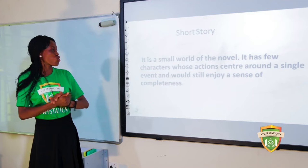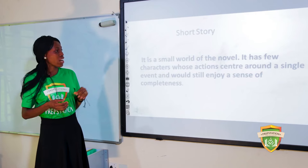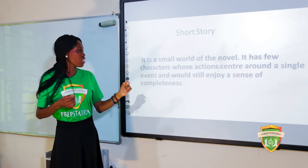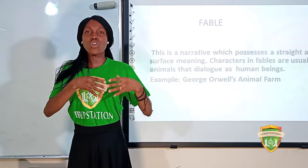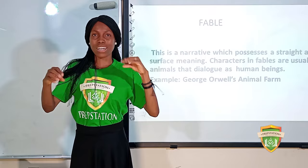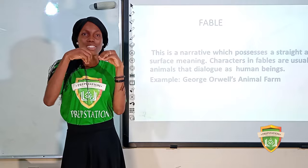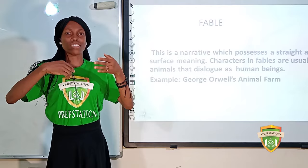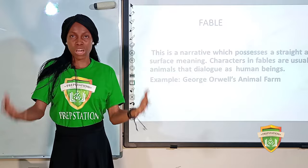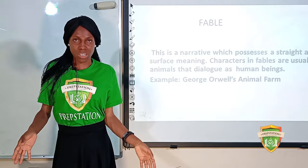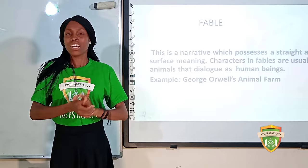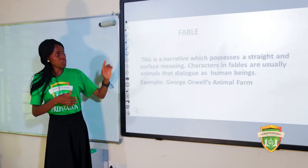A short story is a small world of the novel — it has few characters whose actions center around a single event, yet it still enjoys a sense of completeness. It's not broken into chapters, usually spanning one to three pages, set in one or two places, with about three to four characters. A typical example is the South African short story titled Me and the Fish God.